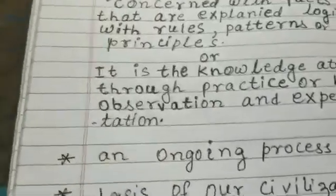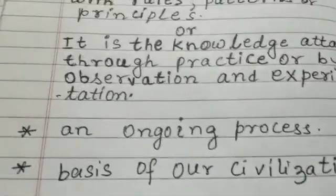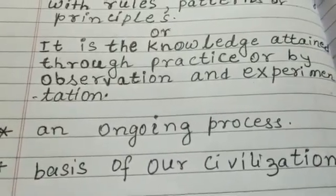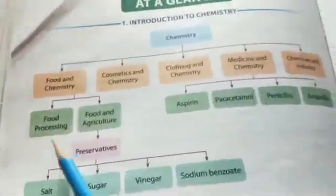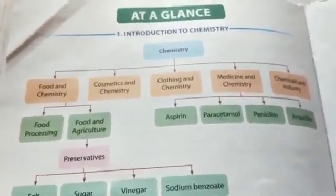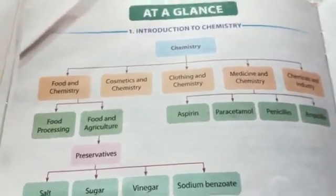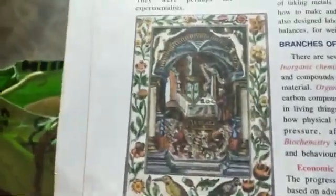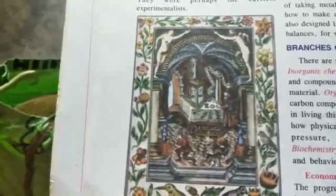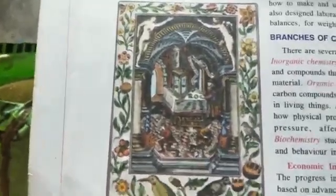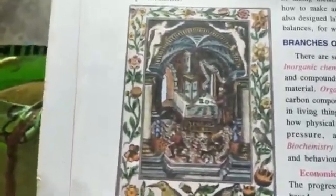Science is an ongoing process — there are still so many things being discovered — and it is the basis of our civilization. Science is divided into earth science, physical science, and biological science. Earth science is further divided into branches like geology (study of rocks and earth), astronomy (study of heavenly bodies), meteorology, and many others. Physical science is divided into physics and chemistry, while biological science is divided into botany, zoology, ecology, and other branches.